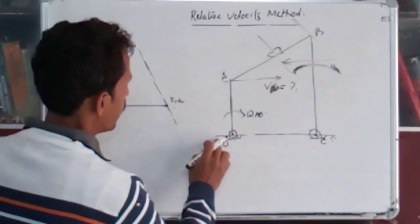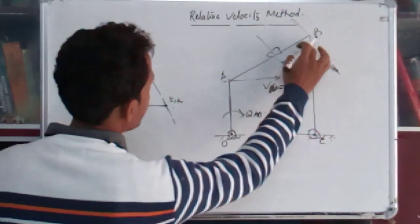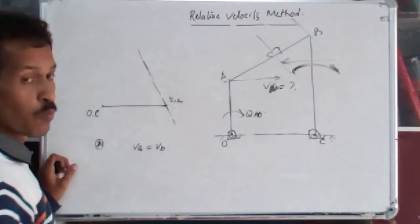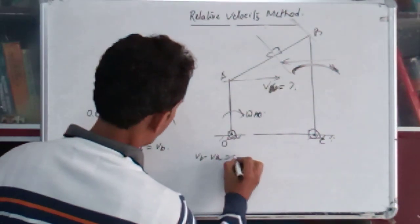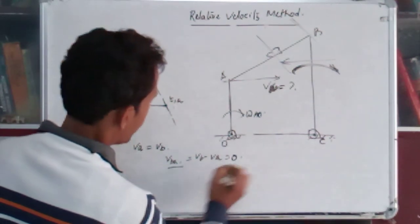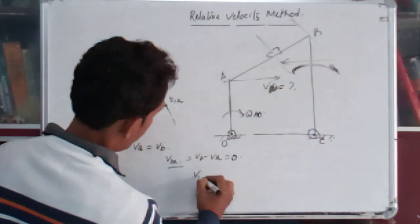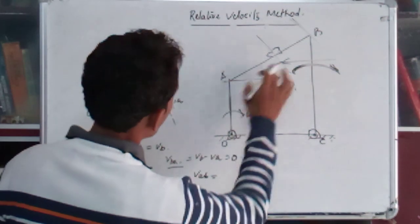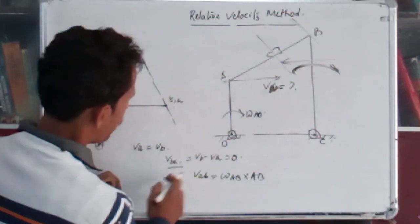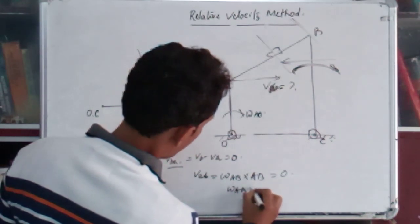The absolute velocity of B and absolute velocity VA are equal, so VB - VA = 0. That means V_BA = 0. Now if you want to find V_AB, since VA = omega_AB times length AB, and V_AB equals zero, then omega_AB is equal to zero.